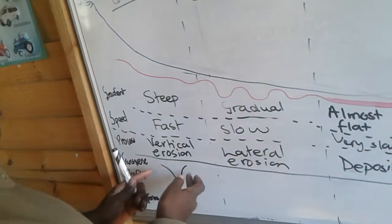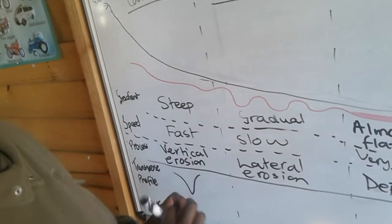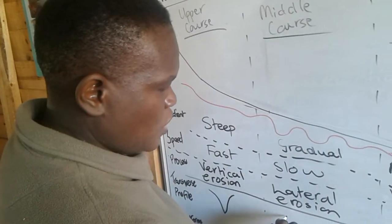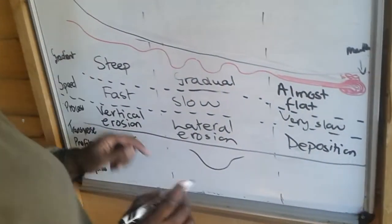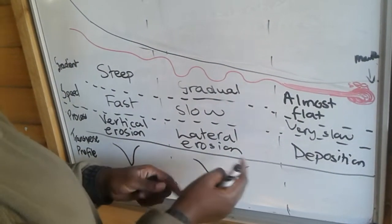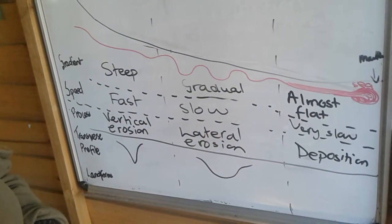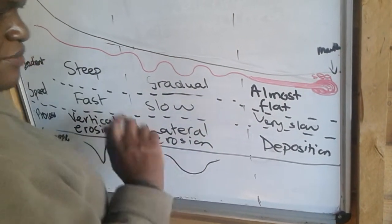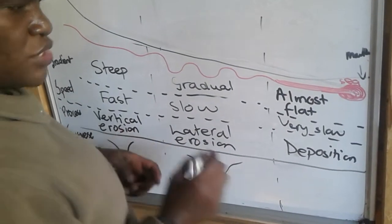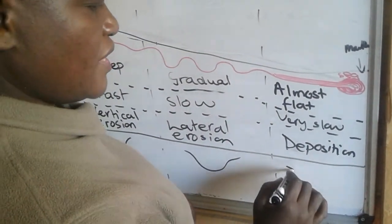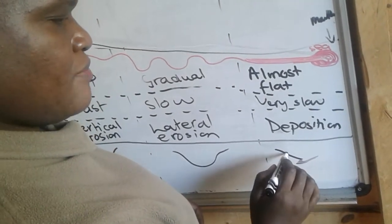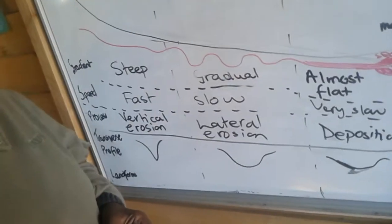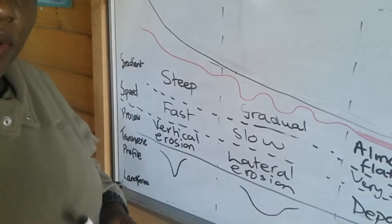As you go into the middle course, because erosion is occurring at the banks, the V-valley becomes a bit wider and more open. But as you approach the lower course, where there is more deposition of material, you are going to experience a flatter, bow shape.